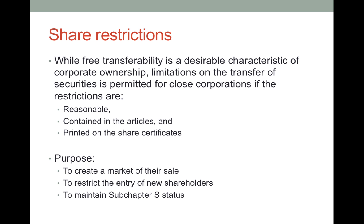Any such restrictions must be contained in the articles — the documents filed with the Secretary of State, which are publicly available so any purchasers can see them. Any such restrictions must also be printed on the share certificates themselves. In California and many other states, it has to be printed in a different color ink — something bold that draws the attention of purchasers so they can say, wait a second, there's a restriction on this; let me investigate whether you even have the power to sell me these shares.